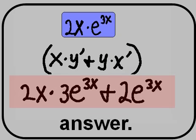And there's our answer: 2x times 3e to the 3x power plus 2e to the 3x power.